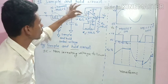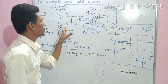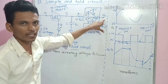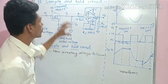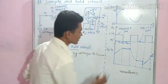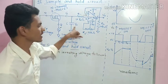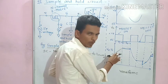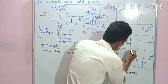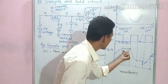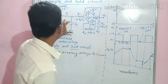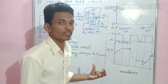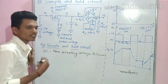Whatever voltage is present on the capacitor at that point, the same voltage appears at the output. This is the hold time — the circuit holds the sampled voltage until the next sample signal arrives.